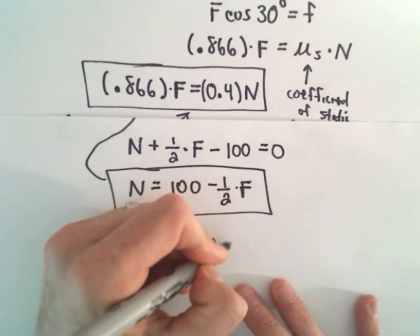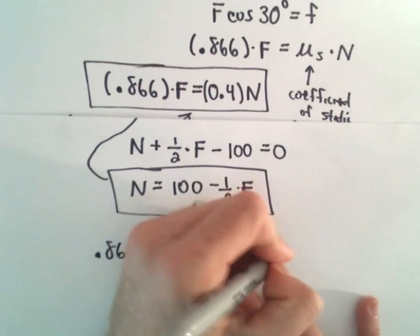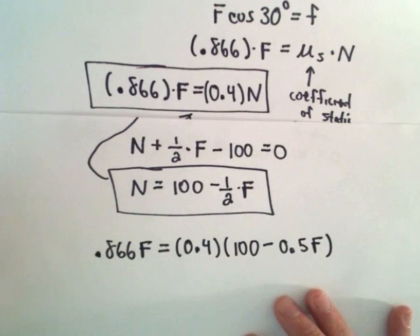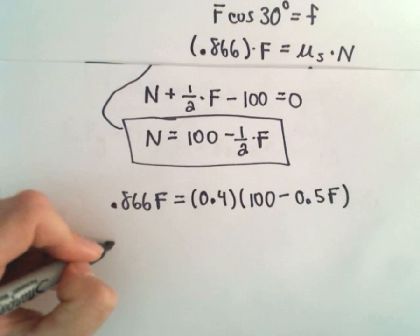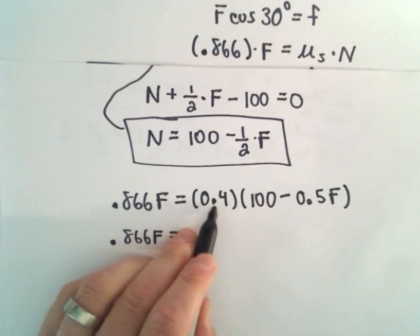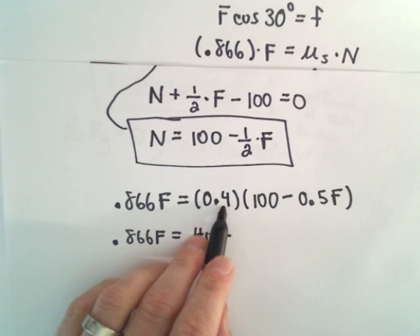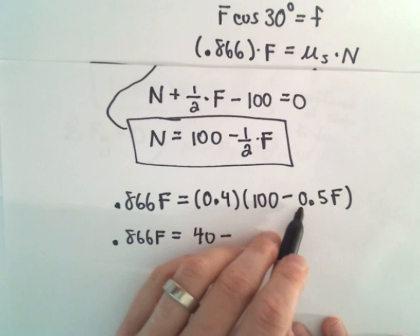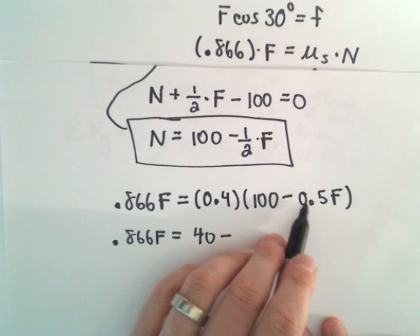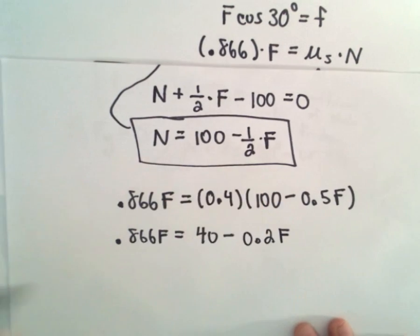So we have 0.4 multiplied by N. So that's 100 minus, okay, so 1 half, I'm going to write that as 0.5 times F. And I don't know, I'm sure this is probably not too bad from here. So let's just simplify, though. So 0.4 times 100, that's going to be 40 minus, okay, so 0.4 times 0.5. If we distribute 0.4 times 0.5, that's going to give us simply 0.2 times F.